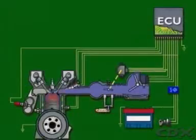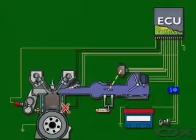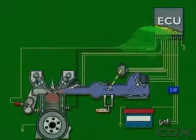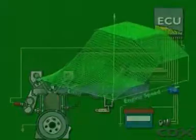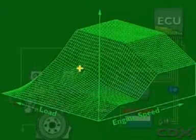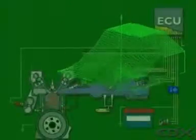When the control unit does not receive a signal from a component, it uses a substitute value from its memory bank. The engine may still operate near its normal level, and the driver may not realize a problem has occurred.